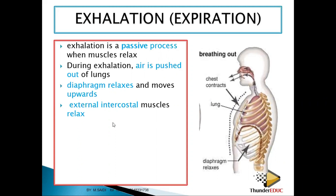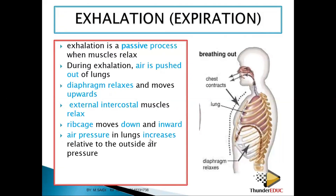The intercostal muscles on the rib cage relax, and the rib cage moves downwards and inwards. When you breathe out, your chest goes down. The diaphragm is pushed inward, reducing the volume inside the lungs. When volume reduces, pressure increases, and that pressure pushes air out of the lungs, since the pressure inside exceeds the atmospheric pressure.